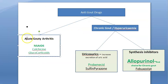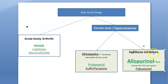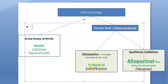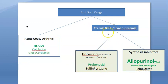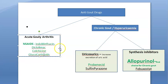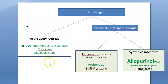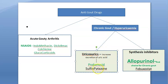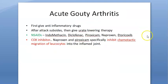Anti-gout drugs: for acute gout you can give NSAIDs, colchicine, and glucocorticoids. For chronic gout they use uricosuric drugs like probenecid and synthesis inhibitors like allopurinol. NSAIDs examples include indomethacin and diclofenac. Then there is colchicine and steroids for acute gout.